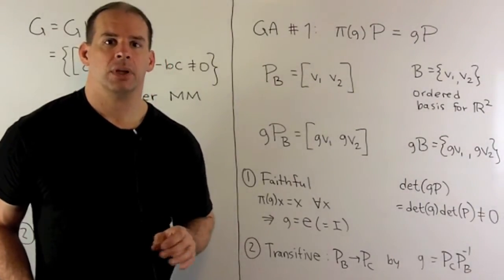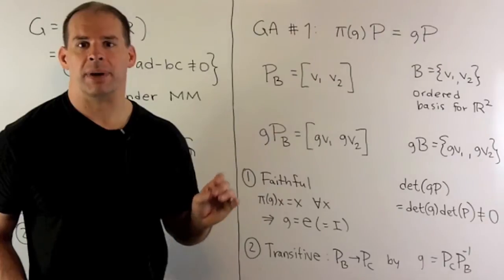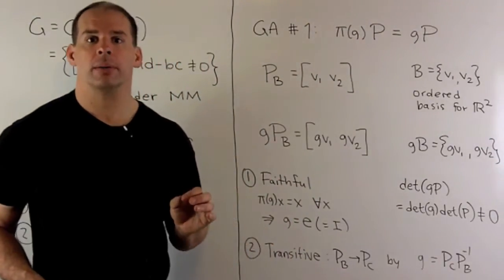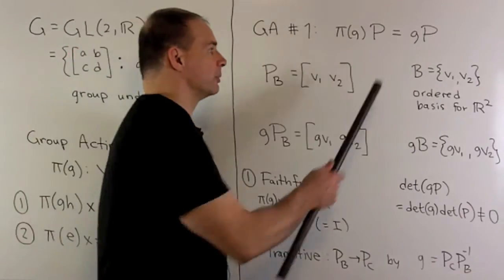For our first group action, consider multiplication on the left by elements of our group. So, if G and P are elements of GL(2,R), π(G) applied to P is going to be G times P.